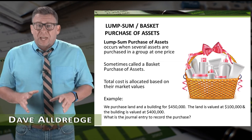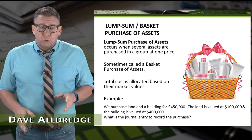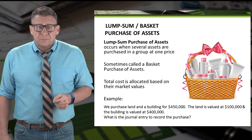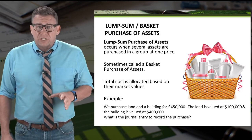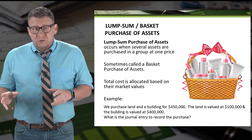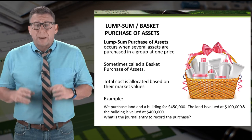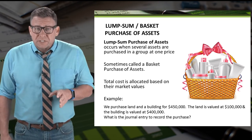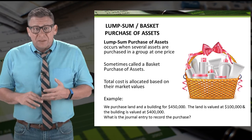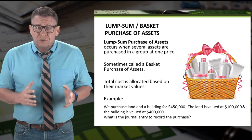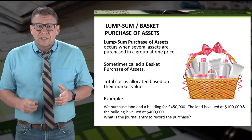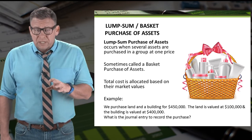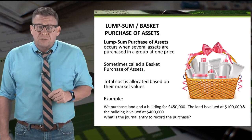Businesses often purchase several assets as a group or basket for a single lump sum amount. This type of transaction is called either a lump sum purchase of assets or a basket purchase of assets. For accounting purposes, we have to allocate the purchase price to the individual assets. This is done by allocating the total cost based on their fair values.